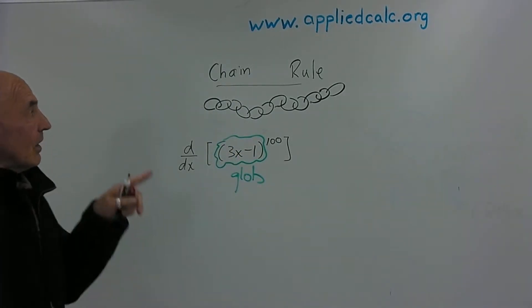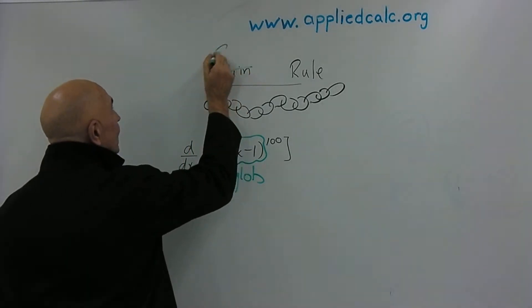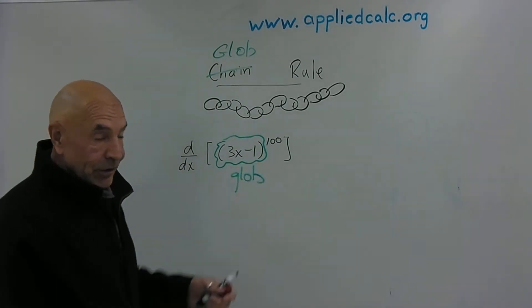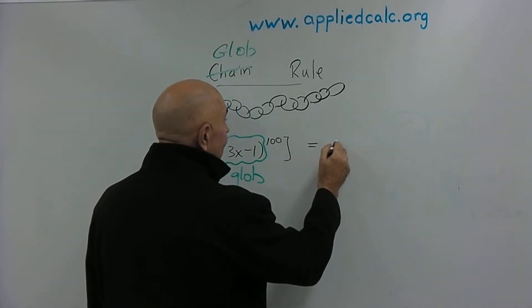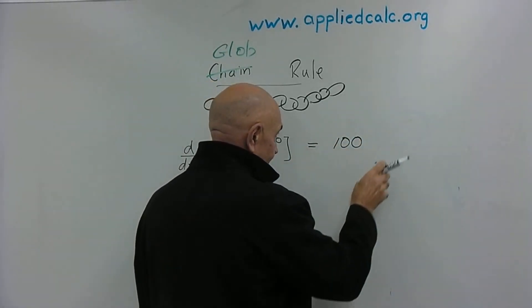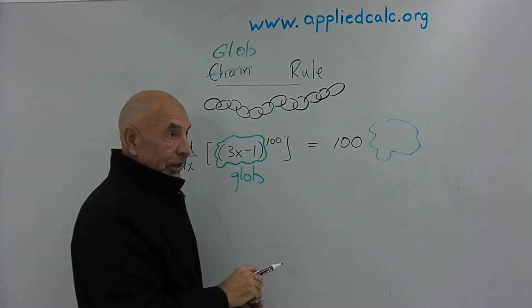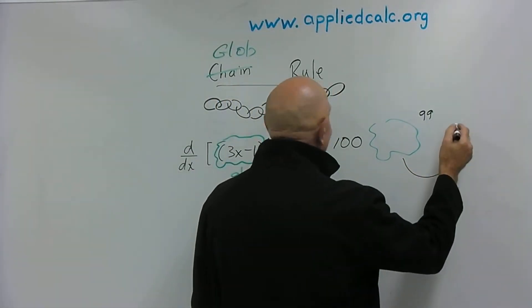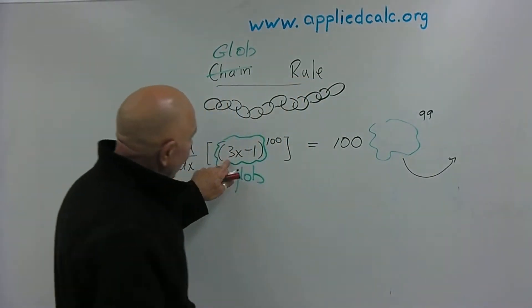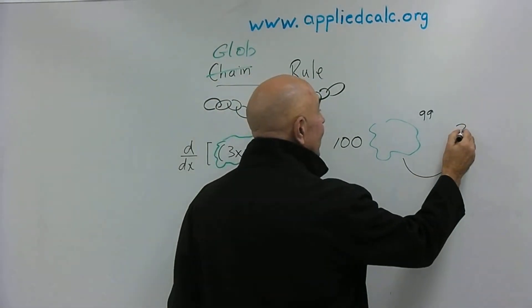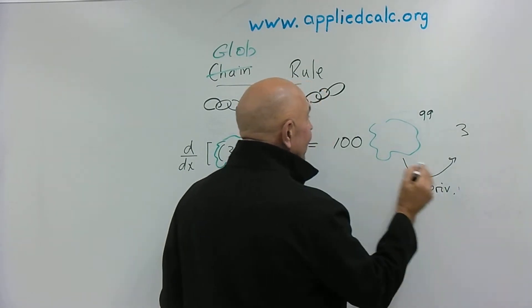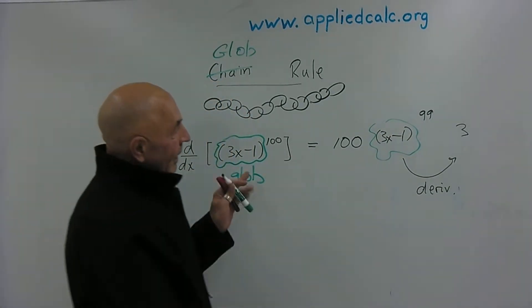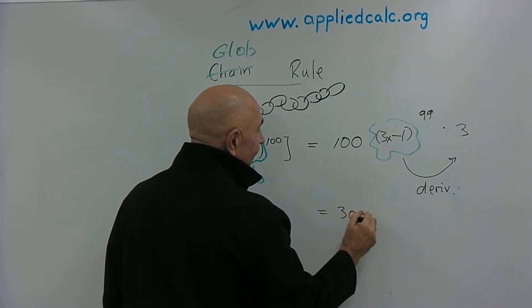The chain rule, which can be thought of as the glob rule, says the derivative of a glob to a power is: 100 times the glob to the power minus one — but that's not all. Then we multiply by the derivative of the glob. In this case the glob is (3x minus 1), so its derivative is just 3. We multiply by 3, and 3 times 100 gives 300.